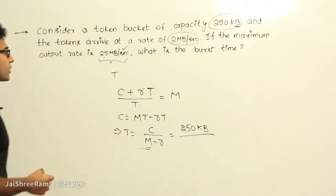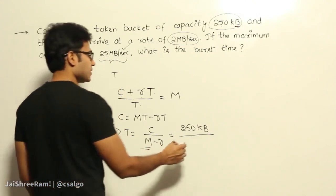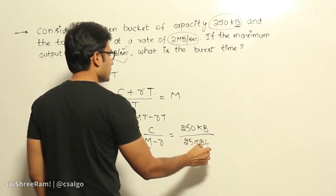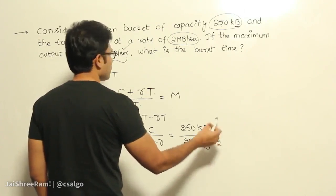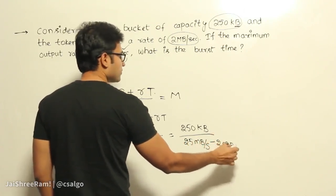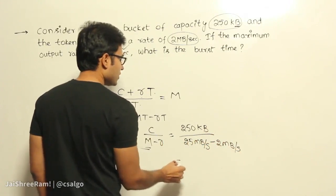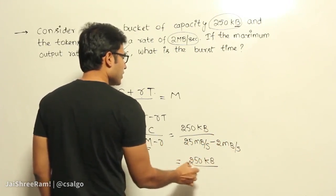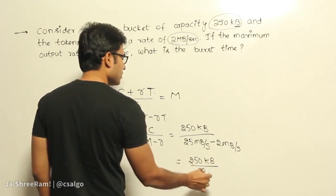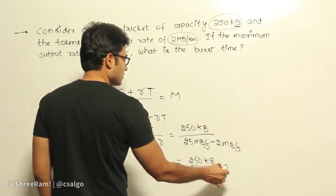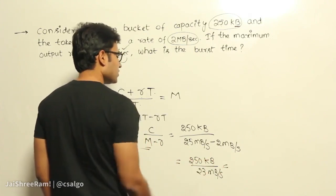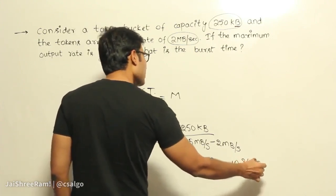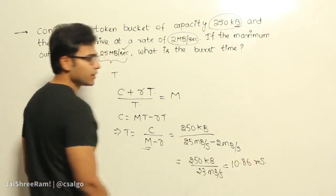So maximum rate is 25 Mbps. Now what is this value? 250 KB divided by 23 Mbps, right? So how many seconds is it going to be? It is going to be 10.86 milliseconds if you compute it. Got it? That is the answer.